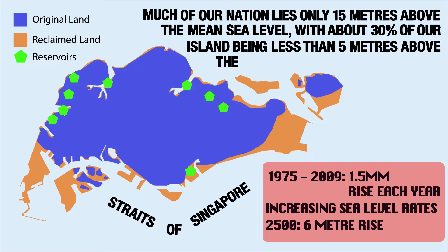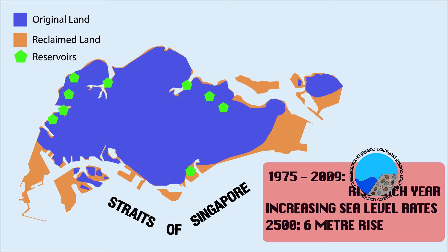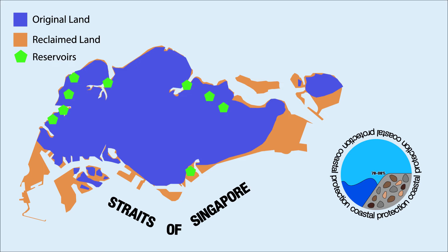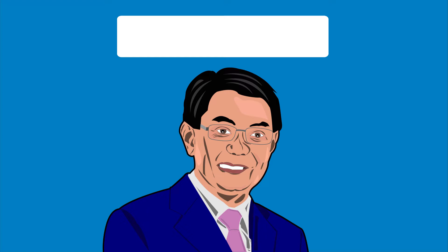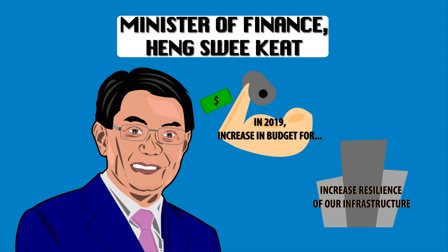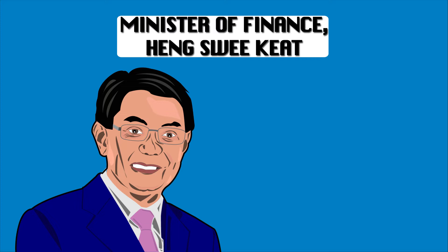Our current efforts to defend our coastal areas from erosion include the construction of walls and stone embankments covering 70 to 80% of Singapore's coastline. To cater for long-term sea level rise, the minimum land reclamation level in Singapore was raised from 3 to 4 metres above mean sea level in 2011. In the 2019 fiscal budget, Minister of Finance Heng Swee Keat announced an increase in budget towards increasing the resilience of our infrastructure to climate change and sea level rise. He said, 'Climate change and sea level rise threaten our very existence. As a low-lying nation, there is nowhere to hide when sea level rises.'